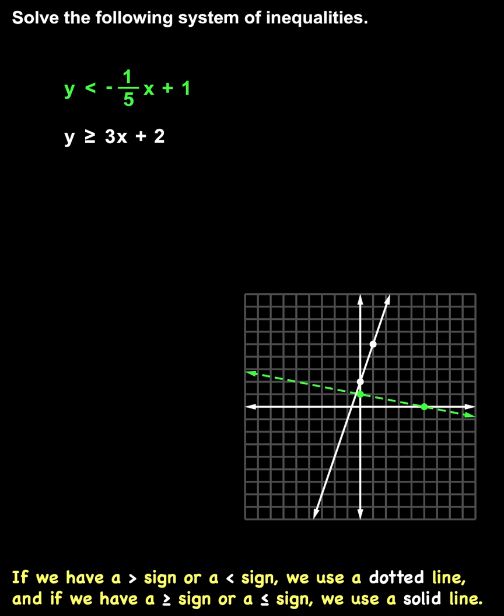The easiest test point to use is (0, 0). So we plug a 0 into our first inequality for both x and y, and we have 0 is less than negative one-fifth times 0 plus 1.